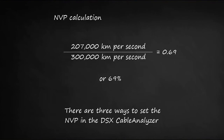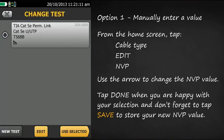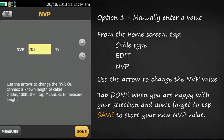There are three ways to set the MVP in the DSX cable analyzer. Entering the value is the simplest way. From the home screen, tap where your cable type is, tap edit, and where you see MVP, tap, and then using the arrows, change the value to your desired value.